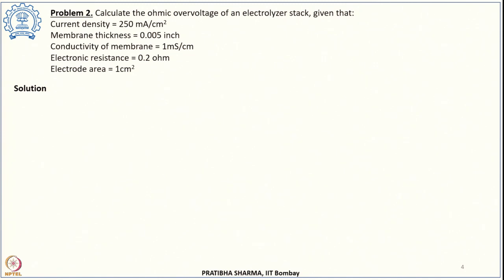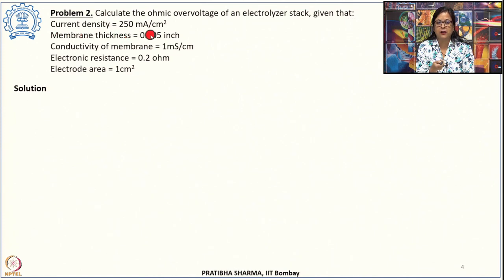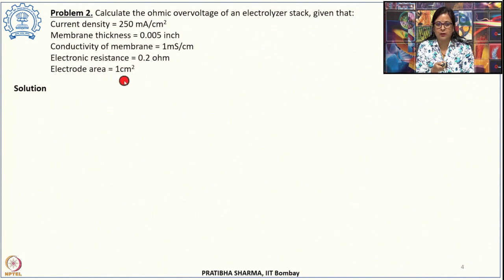The second problem asks to calculate the ohmic overvoltage of an electrolyzer stack. The current density is 250 milliamps per centimeter square, the membrane thickness is 0.005 inch, its conductivity is 1 millisiemens per centimeter, electronic resistance is 0.2 ohm, and the electrode area is 1 centimeter square. We have to find the ohmic overvoltage.